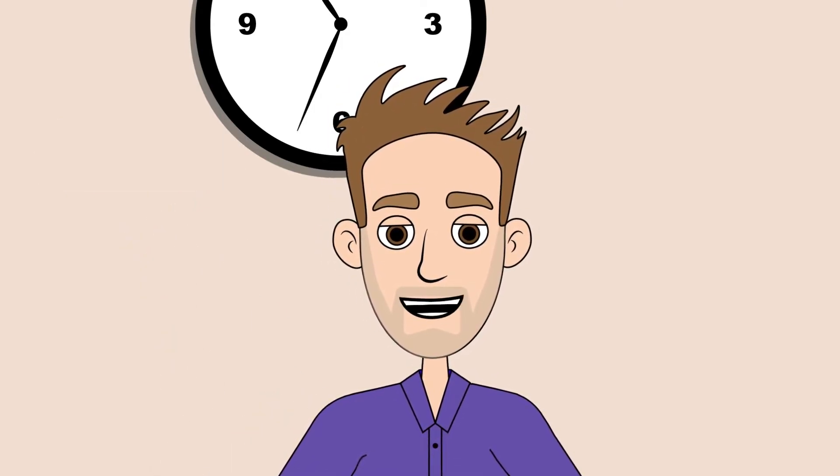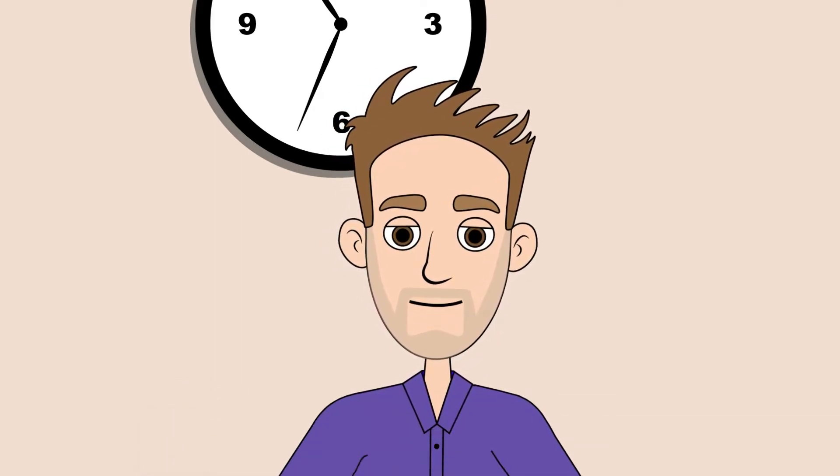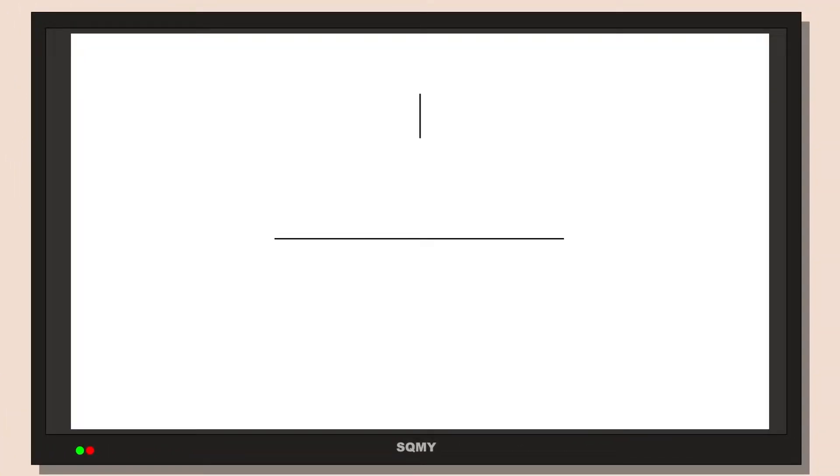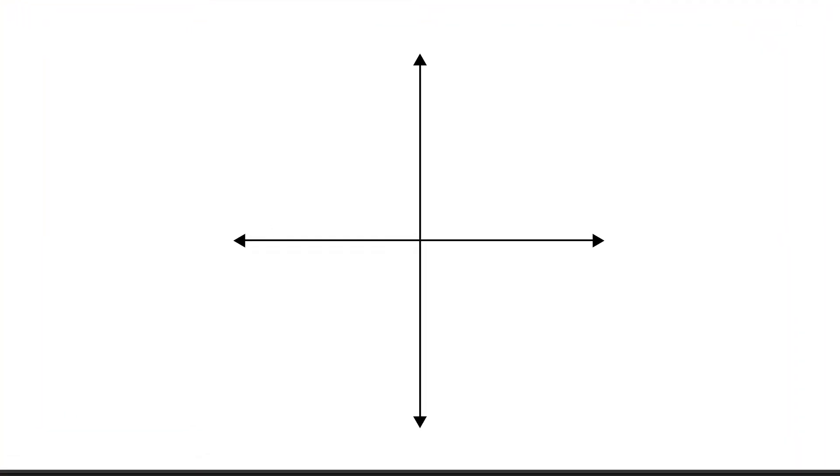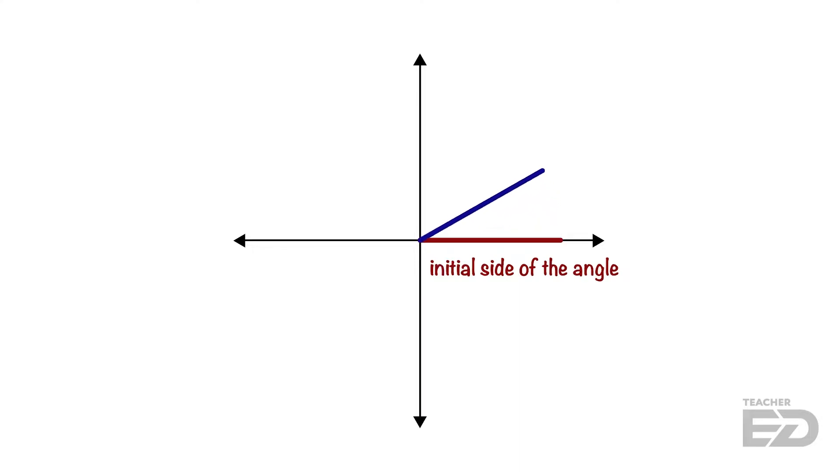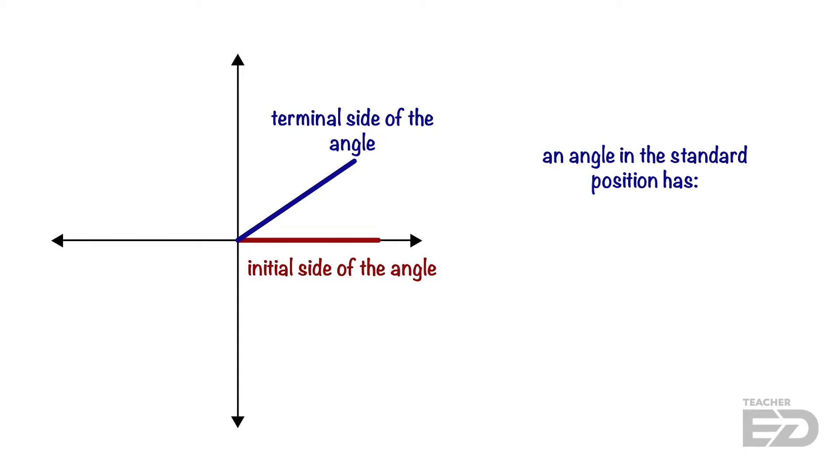Now today we are learning about coterminal angles, so let's get right to it. When we put angles on a coordinate plane or the unit circle, we will start with one side on the x-axis. This side is called the initial side. The part of the angle that moves around is called the terminal side. We say this angle is in standard position, which means the vertex is on the origin and the initial side is on the x-axis.